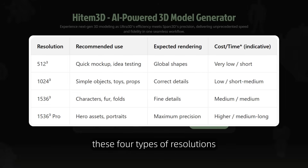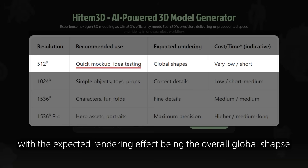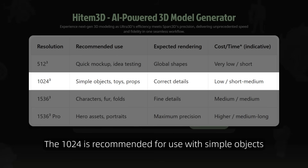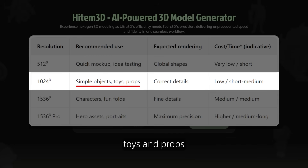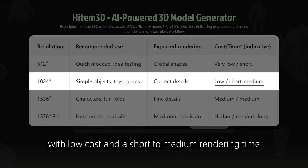Let's compare and understand these four types of resolutions. The 512 is recommended for quick mock-up and idea testing, with the expected rendering effect being the overall global shapes. It has extremely low cost and the shortest rendering time. The 1024 is recommended for use with simple objects, toys, and props. The expected rendering effect is correct details, with low cost and short to medium rendering time.